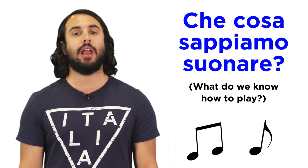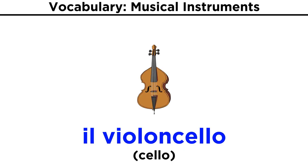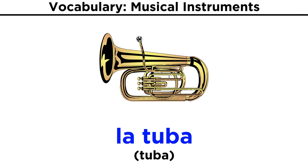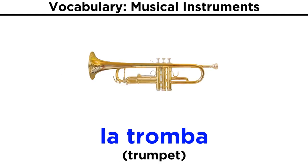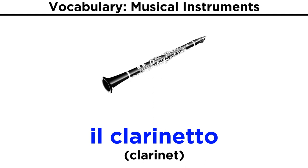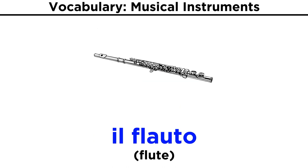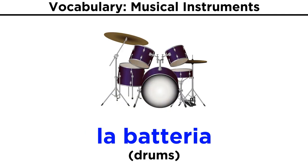What else do we know how to play? La tuba, il trombone, la tromba, il sassofono, il clarinetto, l'oboe, il flauto, le percussioni, la batteria, il basso.